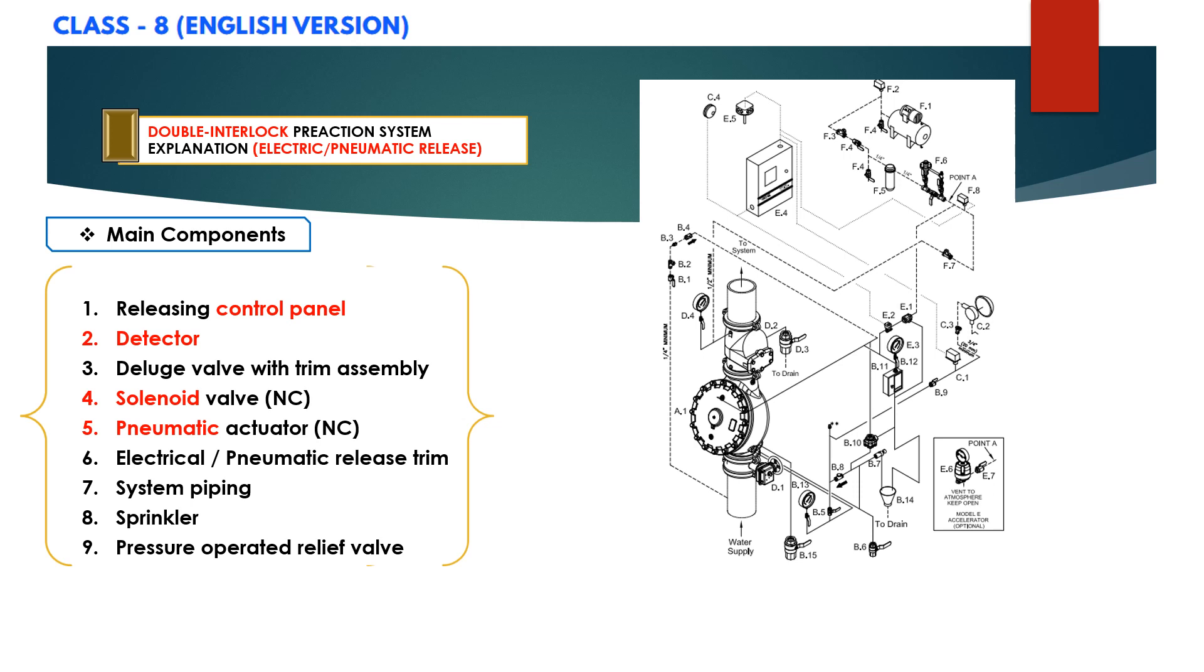These systems utilize a deluge valve controlled by a pneumatic actuator E1, normally held closed by supervisory pressure maintained in the automatic sprinkler system and a normally closed electric solenoid valve E2 controlled by an approved system control panel with compatible detection system.